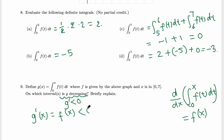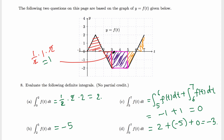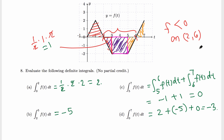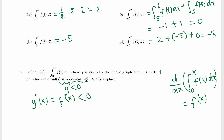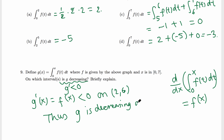So g prime equals f, and we need g prime less than 0, which means f less than 0. Looking at the graph, f is below the x-axis on the interval from 2 to 6. Therefore g prime is less than 0 on 2 to 6, which means g is decreasing on the interval 2 to 6.